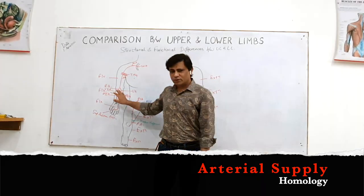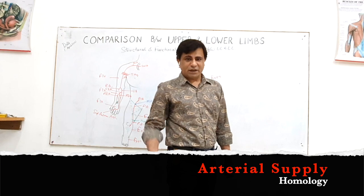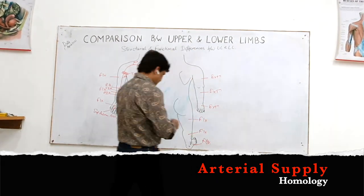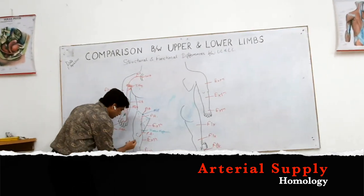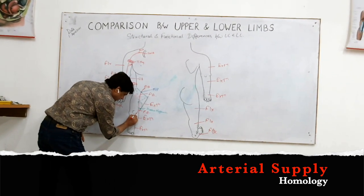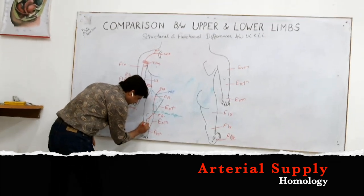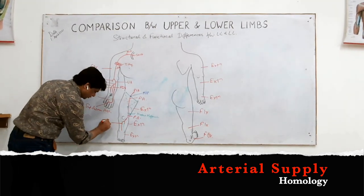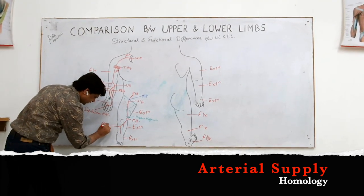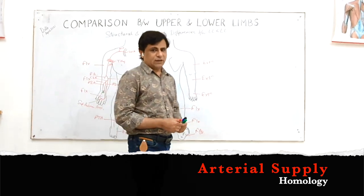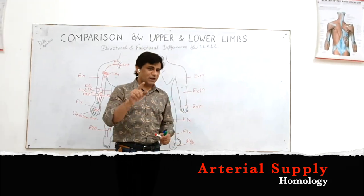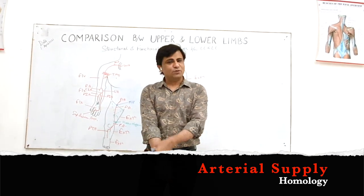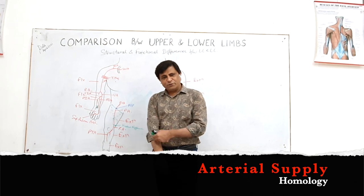The front of the forearm is homologous to the back of the leg — a bulkier compartment requiring more blood. Therefore, the posterior tibial artery is the major continuation of the popliteal artery, running in the back of the leg. The anterior tibial artery is the minor branch, running in the front of the leg, which is the extensor compartment — same as the back of the forearm.